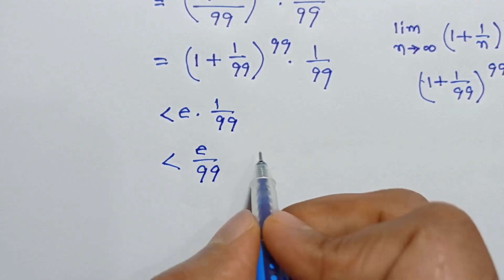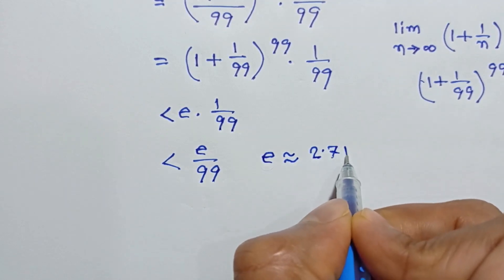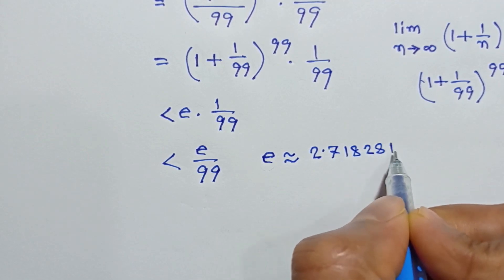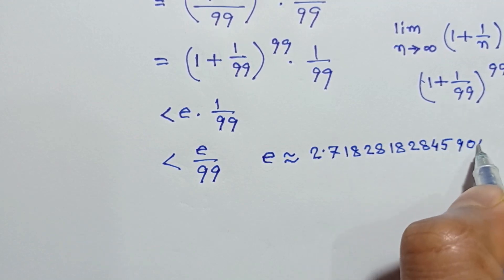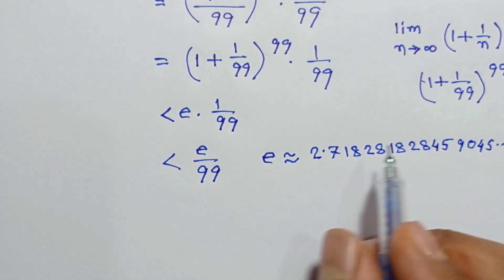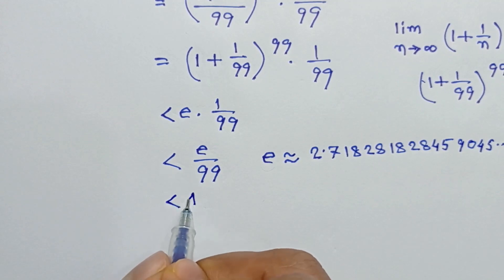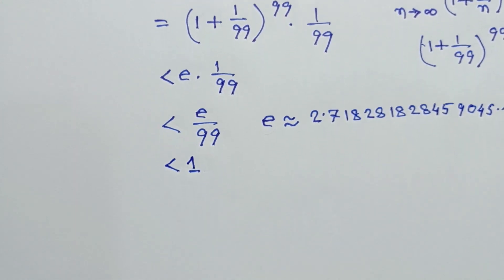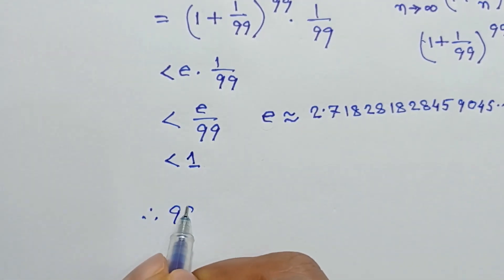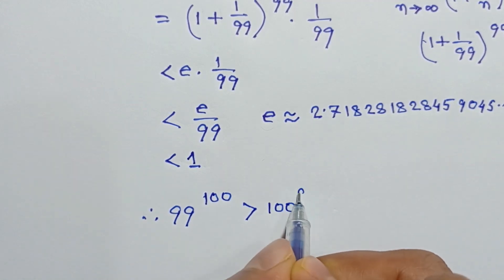The approximate value of e is 2.71828..., and e times 1 over 99 is less than 1. So this value is less than 1, meaning the denominator is greater than the numerator. Therefore we can conclude that 99 to the power 100 is greater than 100 to the power 99.